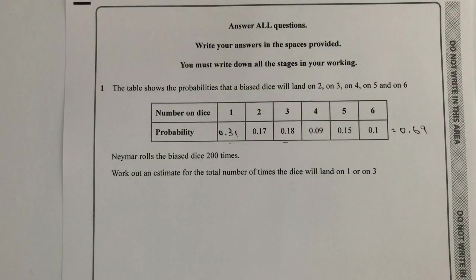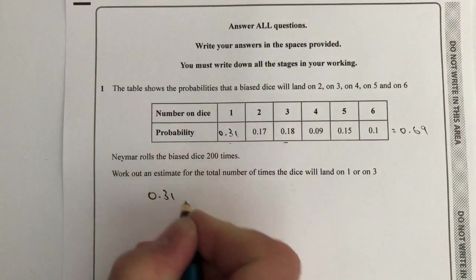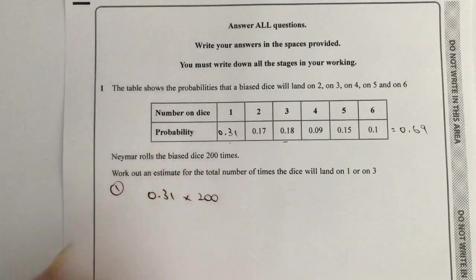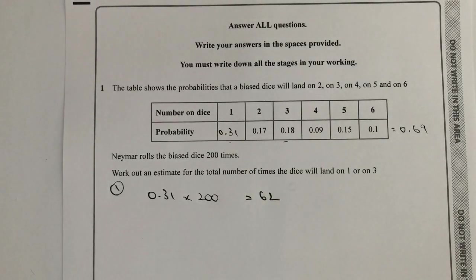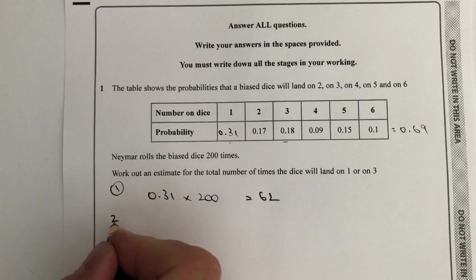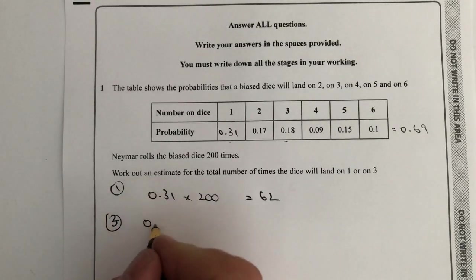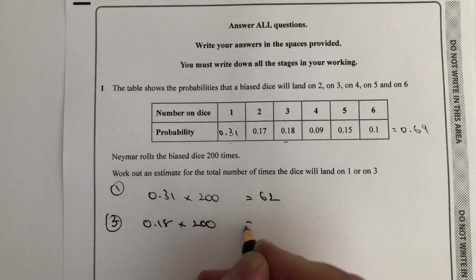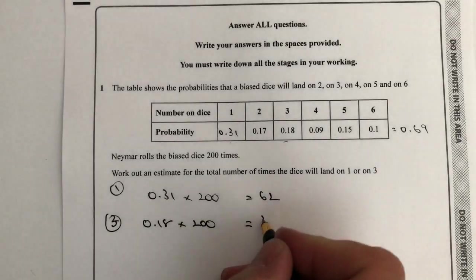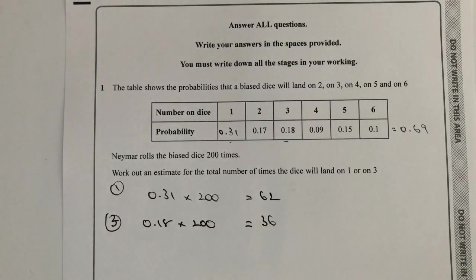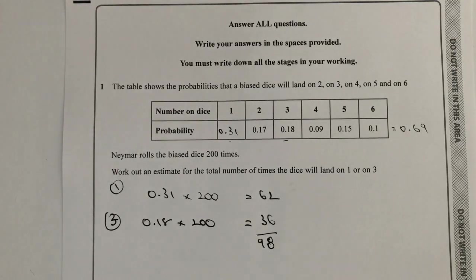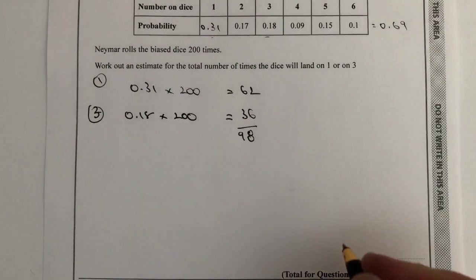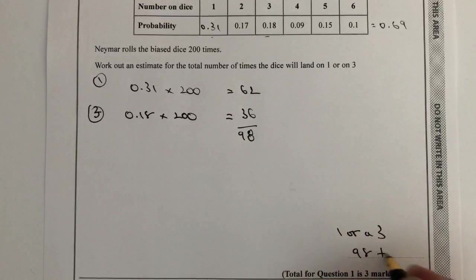The probability of it landing on one is 0.31 times 200, and that's going to be a total of 62 times. Then the probability of it landing on the number three is 0.18 times 200, which is 36 times. So the total amount of times it will land, if he rolls the dice 200 times as an estimate, will be these two added together — that's going to be 98 times.